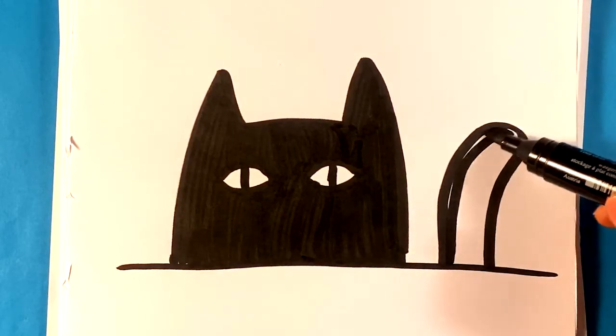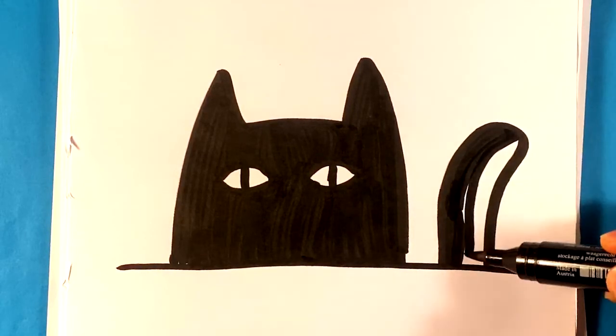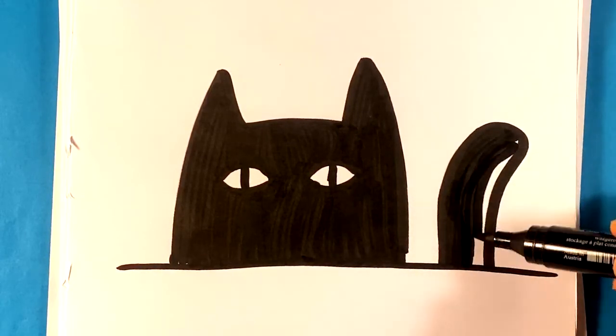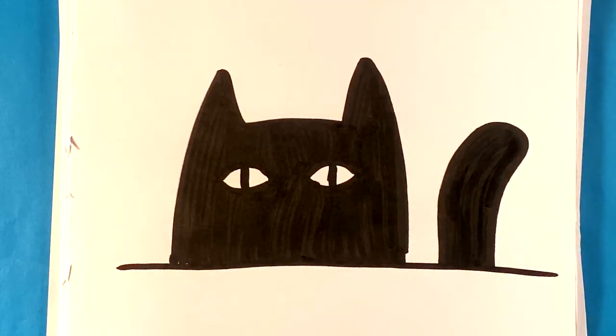And then I'm going to do the same thing over here for the tail. I'm going to fill that in. And now you have this shape that you can kind of put anywhere. You can put on bulletin boards or announcements. You have this cat like looking over the edge or something like that. It's real simple.